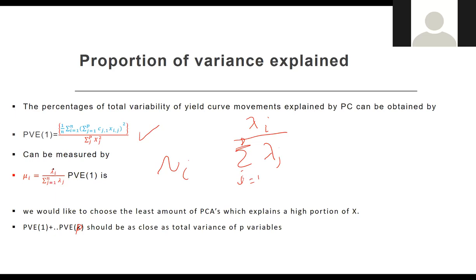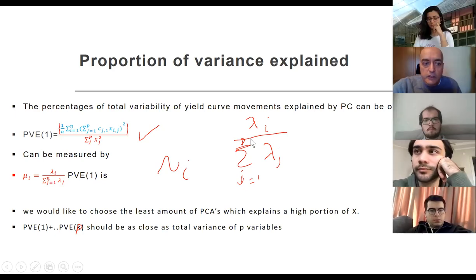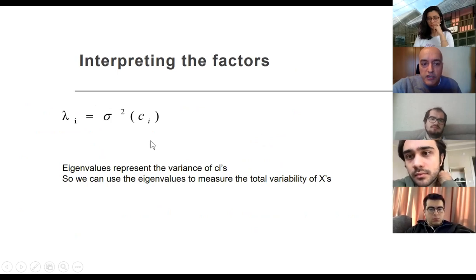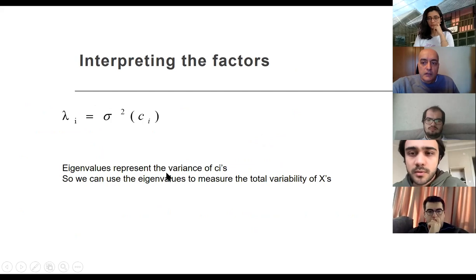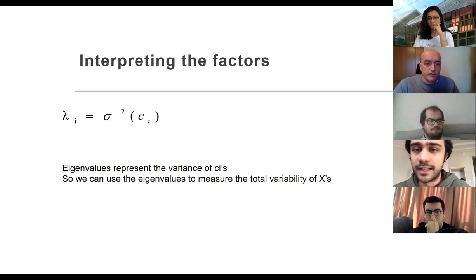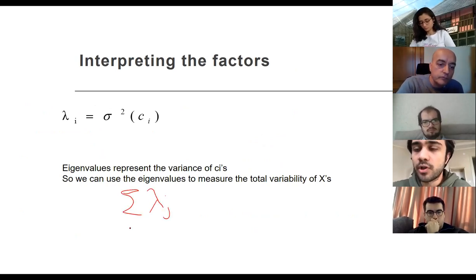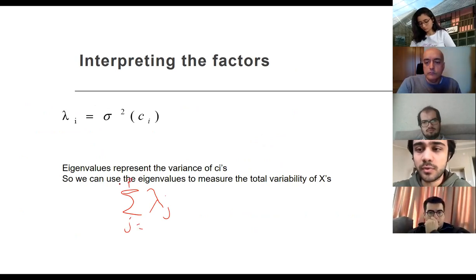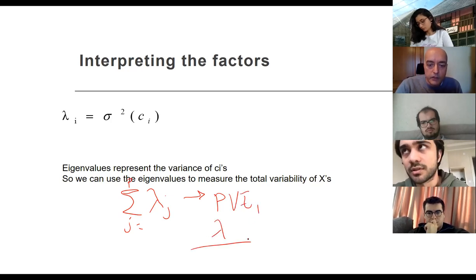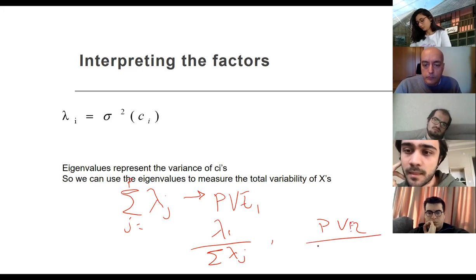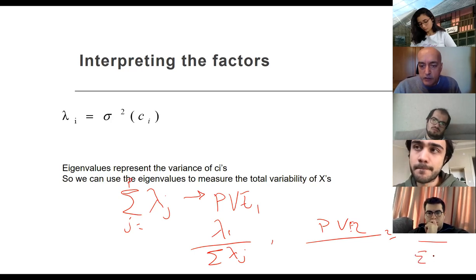For instance, if I divide lambda 1 to sum of these lambda J's or total sums, that is the percentage or the proportion of the whole variability that can be due to the first eigenvector or the first factor. Then the second goes back to lambda 2 times the sum of that, and so on. These are the marginal explanatory power of the total variability. So all these sums of these PVE to PVK should add up to one, which means that the whole explanatory power of X is explained.